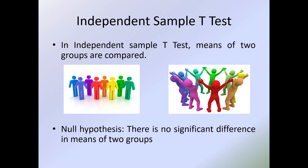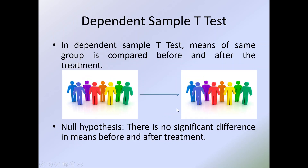I will request all my viewers to kindly refer to my previous video to understand the flow of this tutorial. The null hypothesis framed is there is no significant difference in the means of the two groups. The paired t-test is for before and after — for example, before the workshop and after the workshop.